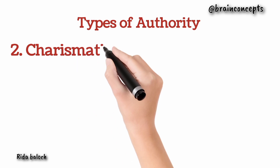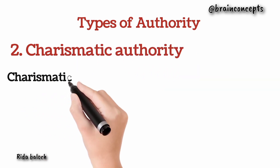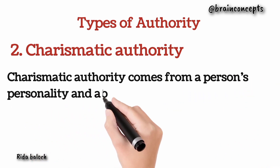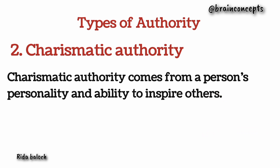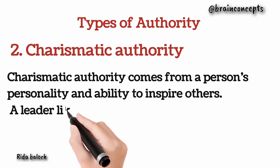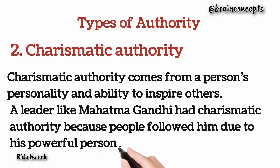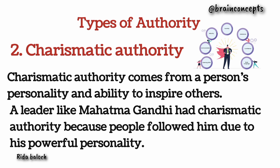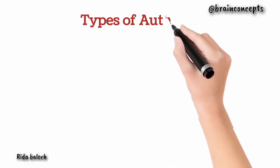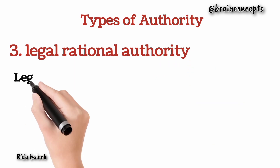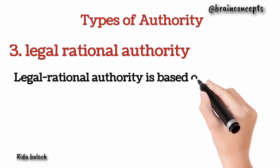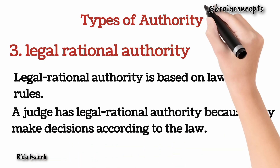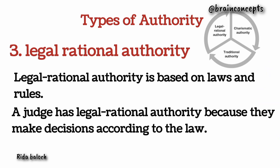The second type is charismatic authority. Charismatic authority comes from a person's personality and ability to inspire others. For example, a leader like Mahatma Gandhi had charismatic authority because people followed him due to his powerful personality. The third type is legal-rational authority, which is based on laws and rules. For example, a judge has legal-rational authority because they make decisions according to the law.